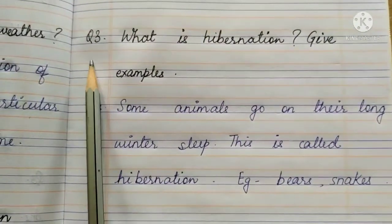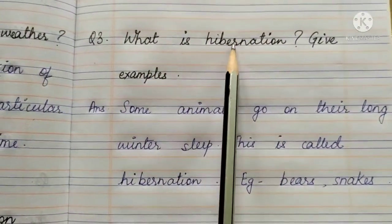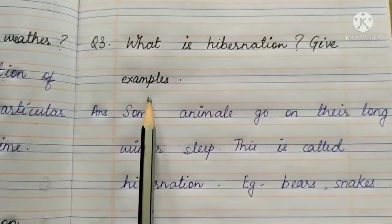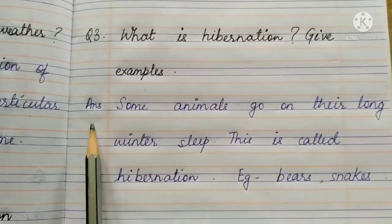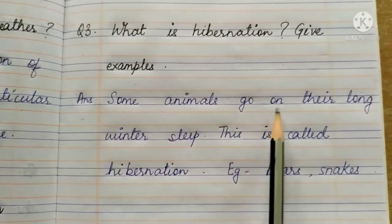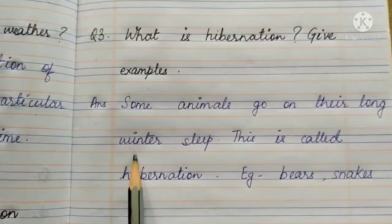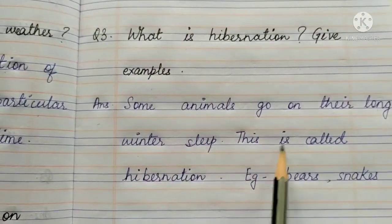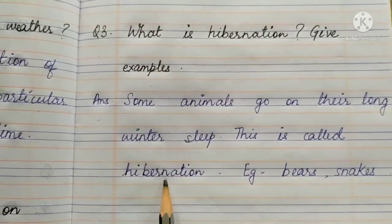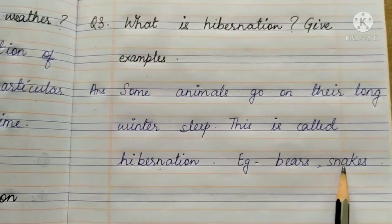Question 3. What is hibernation? Give examples. Answer: Some animals go on their long winter sleep. This is called hibernation. Examples: bears and snakes.